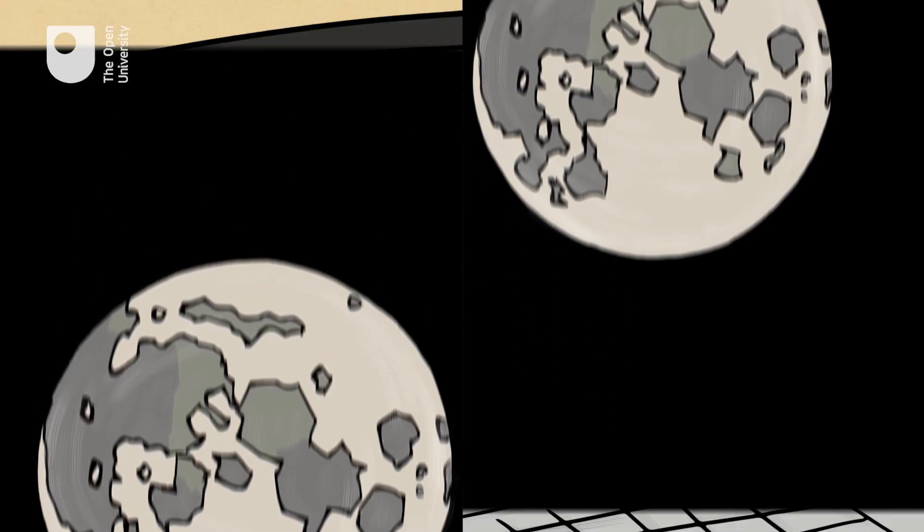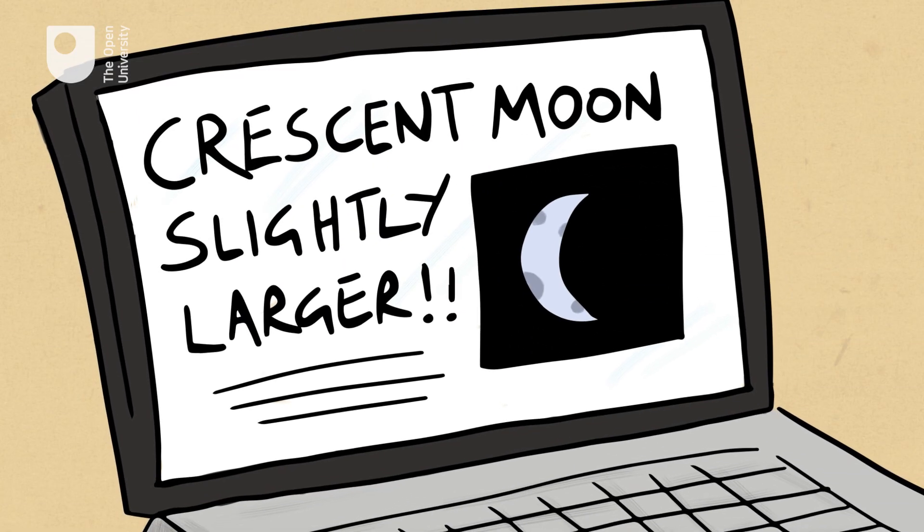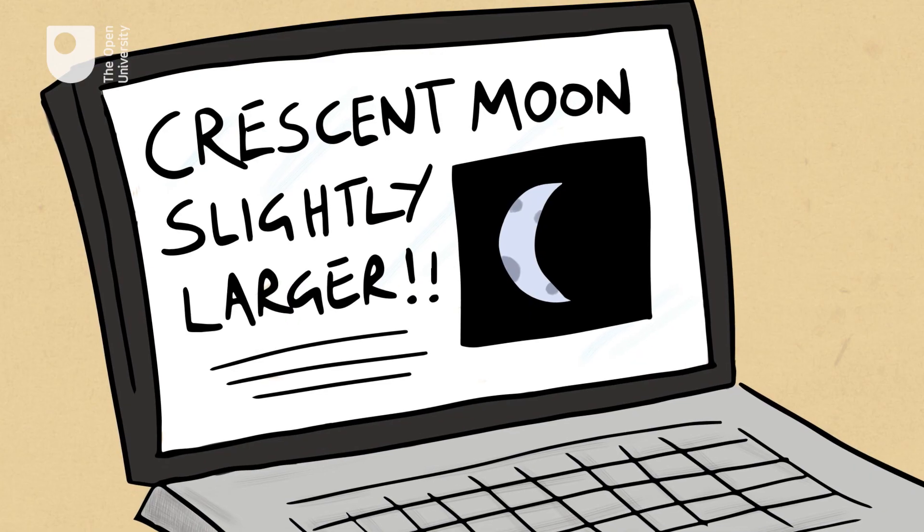The Moon is at its closest once per orbit, but nobody makes a fuss when, say, the crescent moon is fractionally bigger than other crescent moons of the year.